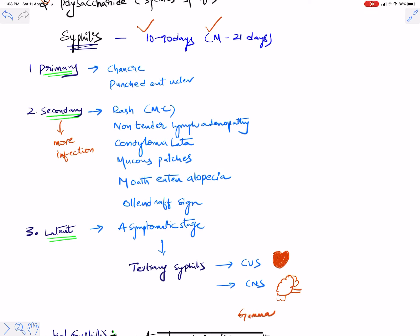In primary syphilis, the lesion is a chancre — a commonly asked surgical question about the edge of the ulcer, which is punched out. Secondary syphilis is more infectious than primary. Among secondary syphilis lesions, condyloma lata is the most infectious lesion in all of syphilis.